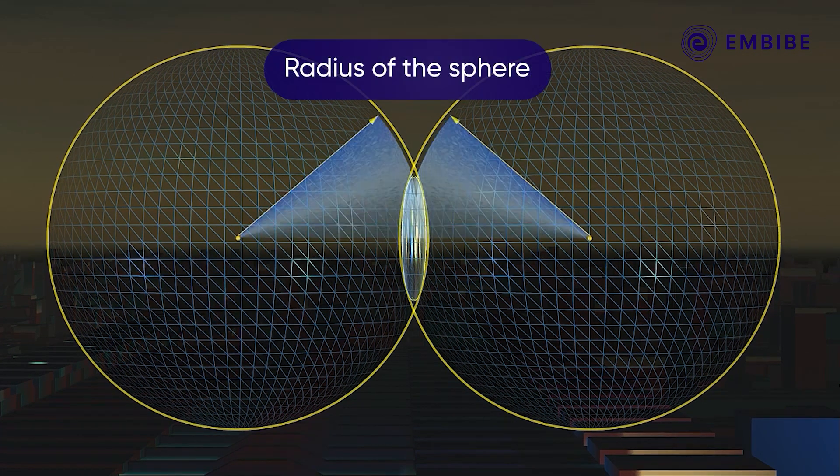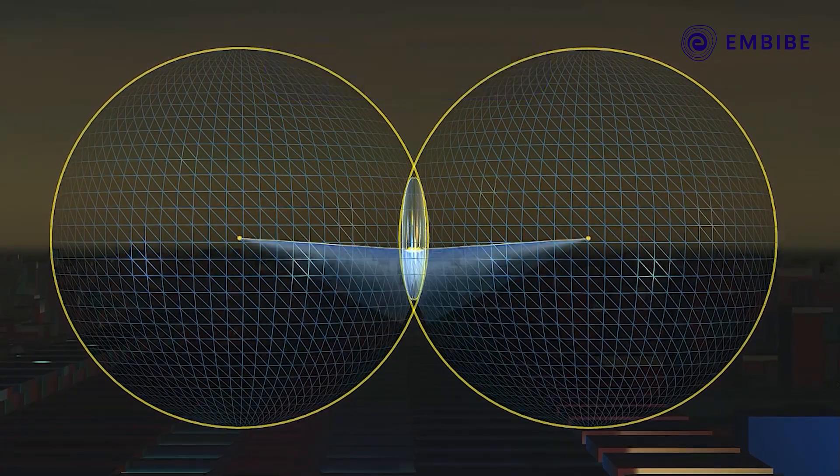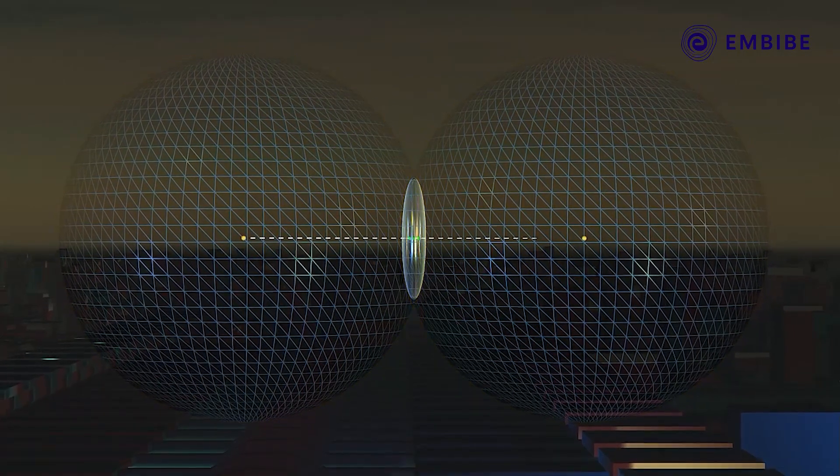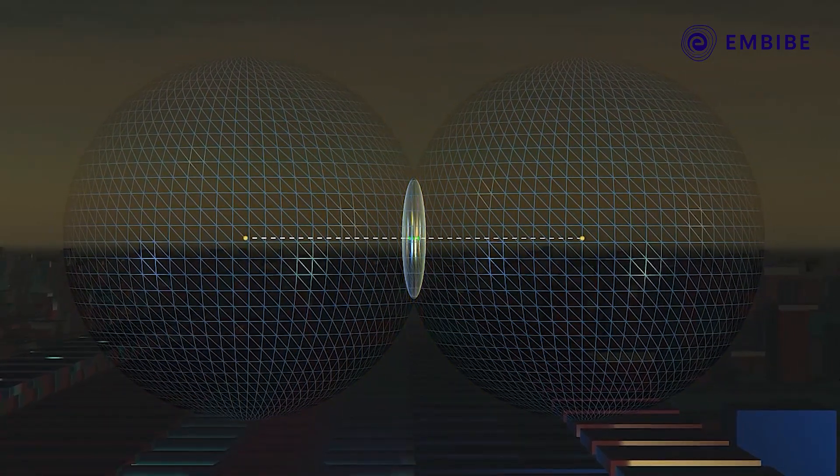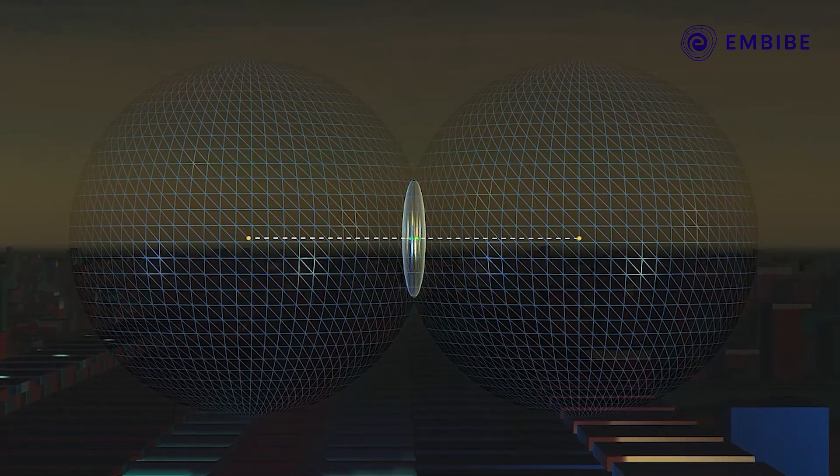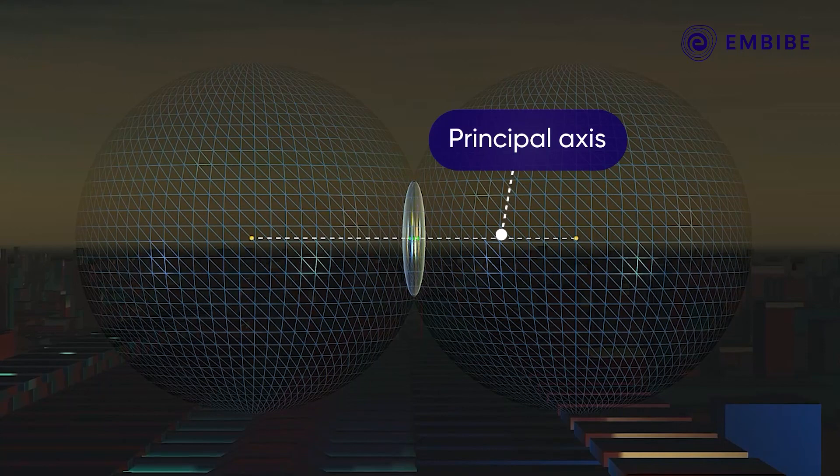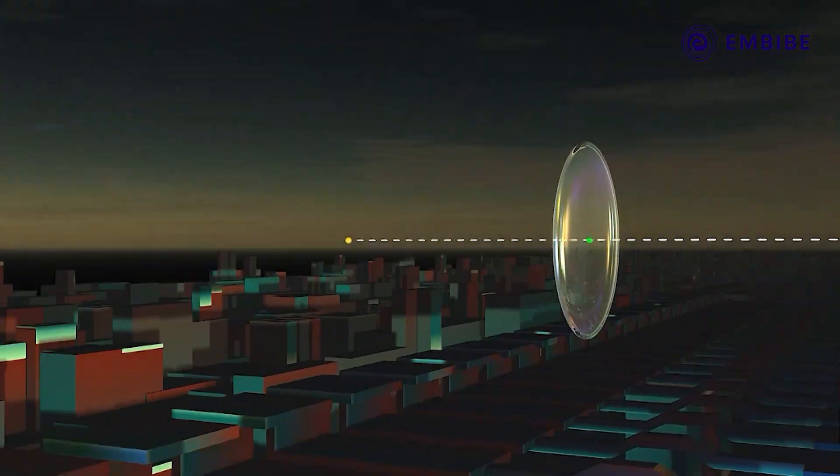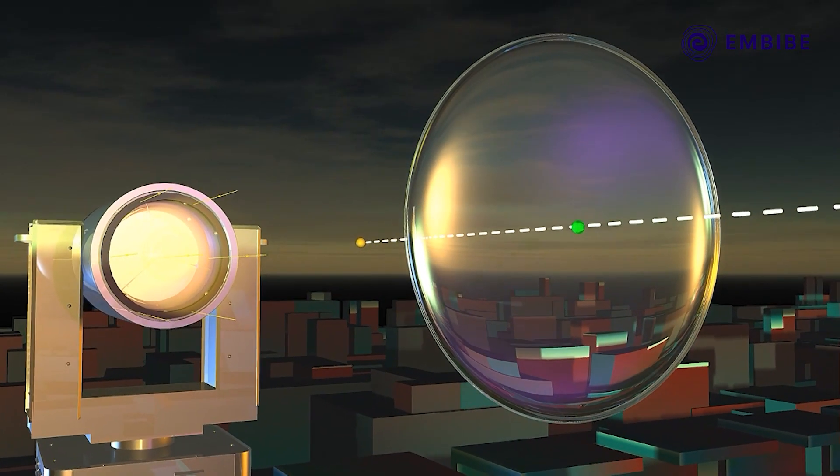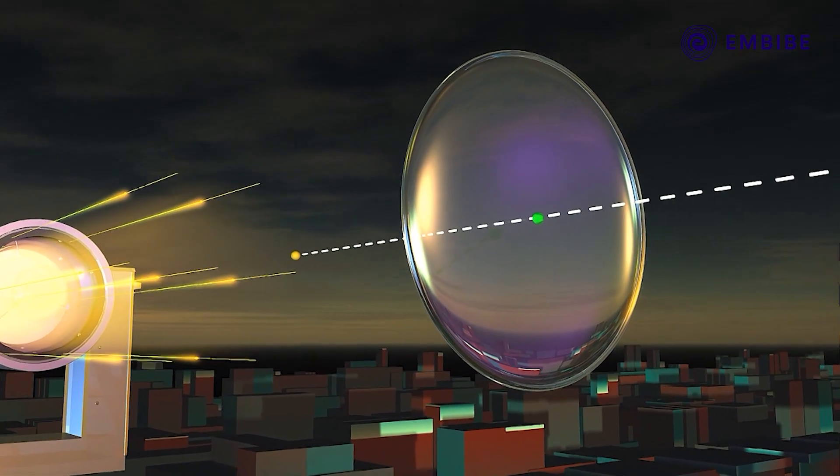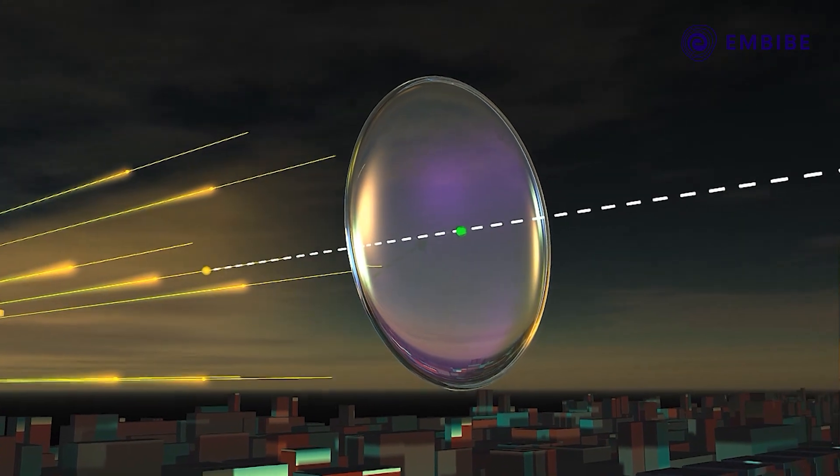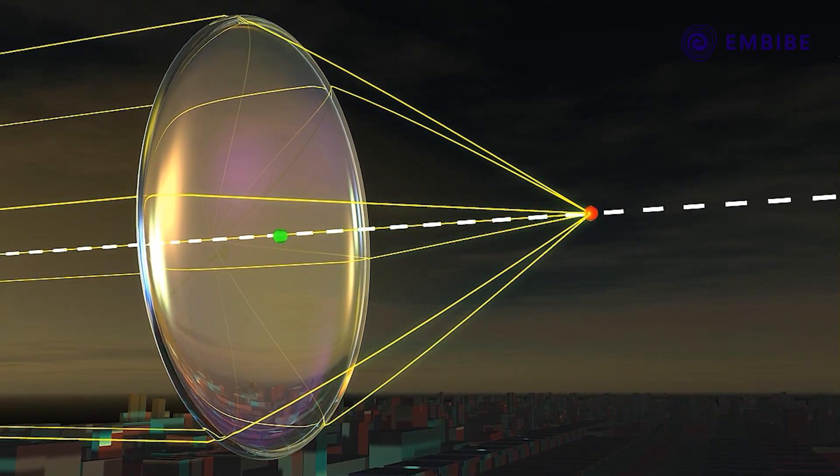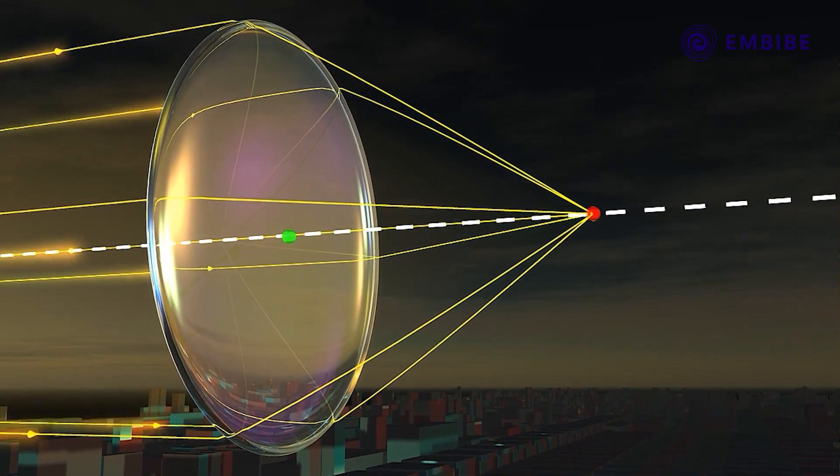The radius of the spheres is known as the radius of curvature of the lens. The line joining the center of curvature on both sides of the lens is known as the principal axis, which passes through the optical center of the lens. The light rays parallel to the principal axis and incident on one side of the lens undergo refraction and converge at a point on the principal axis on the other side.